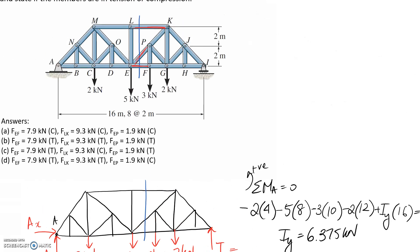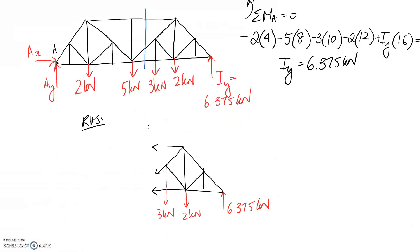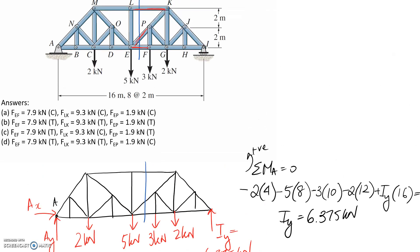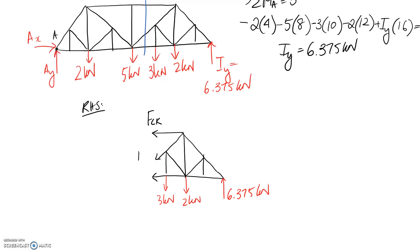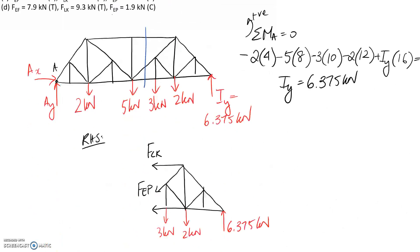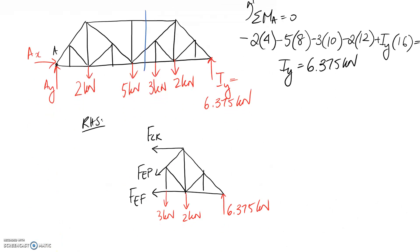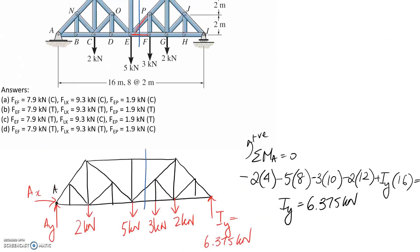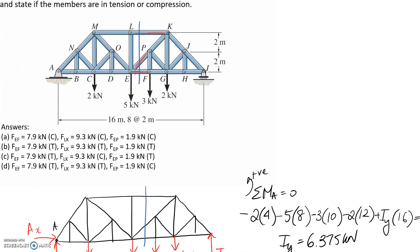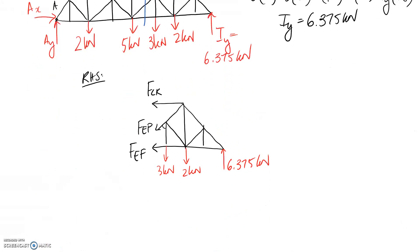This top one here is cut between L and K, so let's call this FLK. This next one on the diagonal is cut between E and P, so let's call it that. Finally, this bottom one cut between E and F, we'll call it FEF. The other thing I'm going to need is the angle that this member here is at. You can get that quite easily off the diagram. If this is 2 meters and this is 2 meters, like it tells us, then this is going to be a 45 degree triangle.